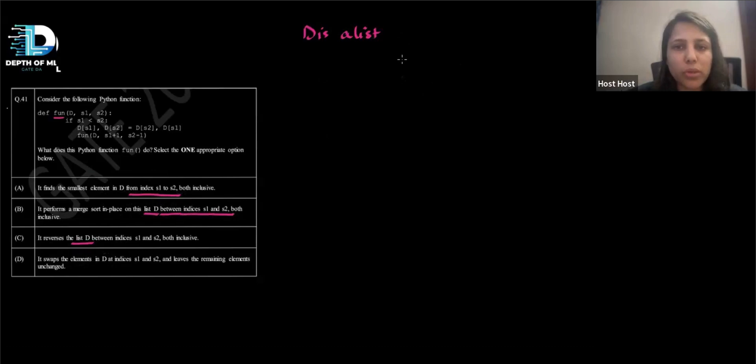So how to do these questions? I will assume that D is a list, say 1, 2, 3, 4. And it's saying something about the indexes and everything. So let me assume S1 is equals to 0 and S2 is equals to 3. So it's saying inclusive at multiple places. So I'll take the inclusive index. So I'll take 0, 1, 2, 3.